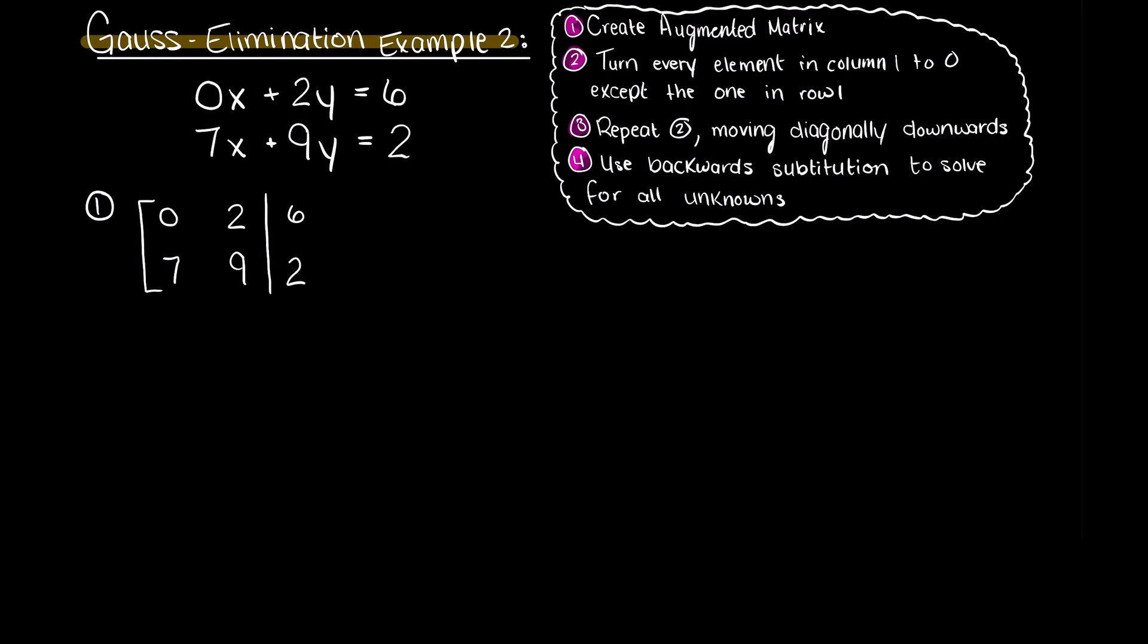Now, in order to solve this matrix using Gauss elimination, we first need to transform this matrix into an upper triangular matrix, which means we need to turn all elements in our matrix below the diagonal to 0. Then, we use backward substitution to solve for the remaining variables.